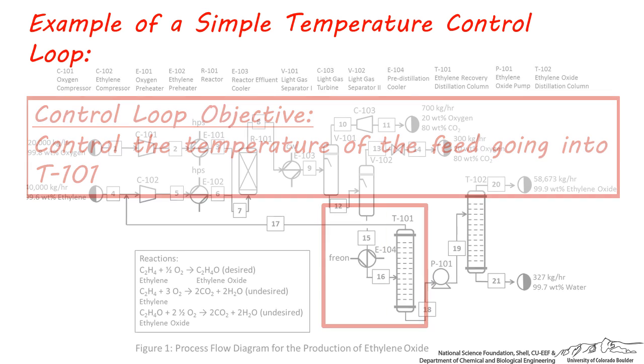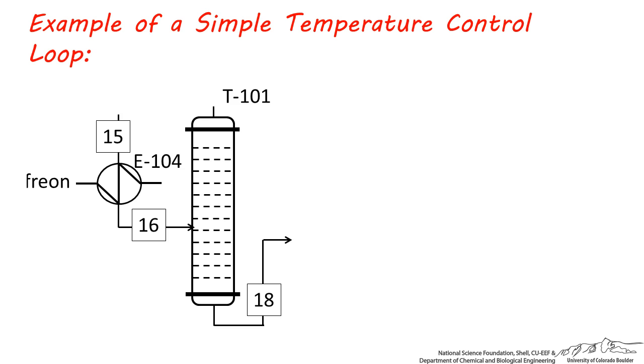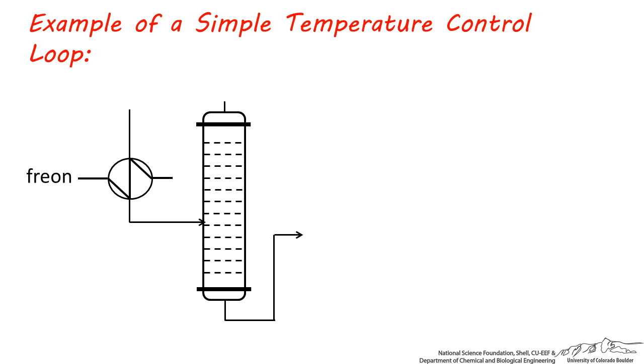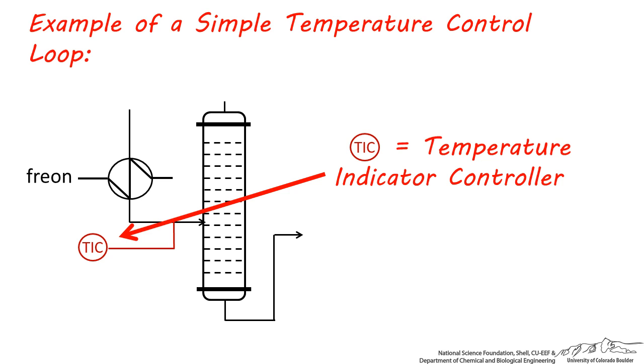Let's take a closer look at E-104 and T-101, and we'll start by taking away some labels so you can see the streams more easily. This stream's temperature must be controlled, so we'll draw a line signifying that we're measuring the temperature and sending a signal to a temperature indicator controller, abbreviated TIC.